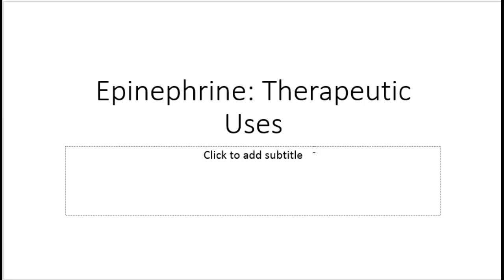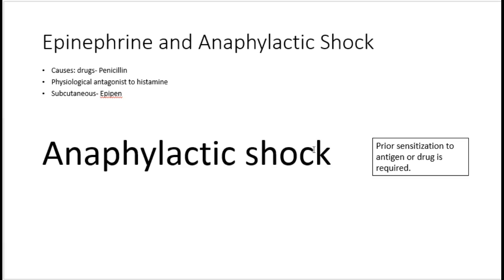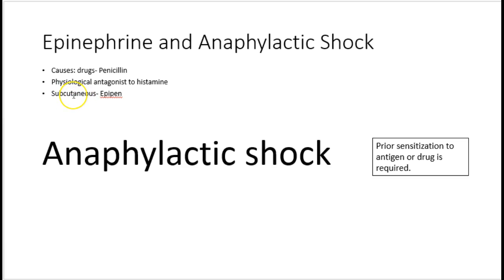Coming to the therapeutic uses of epinephrine, one major use is anaphylactic shock. Certain drugs or allergens can induce anaphylactic shock; a classical example is penicillin, which can induce anaphylactic shock at subsequent exposure. Epinephrine is known to be a physiological antagonist to histamine. The route of choice in anaphylactic shock is subcutaneous injection, and a common example is the EpiPen, a pen-like injector device.